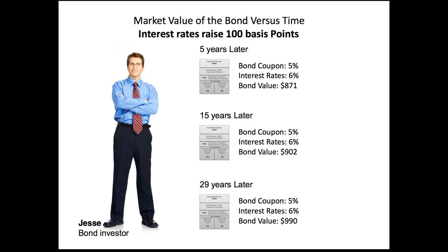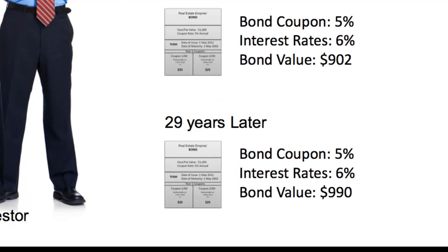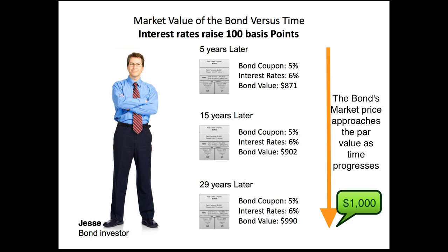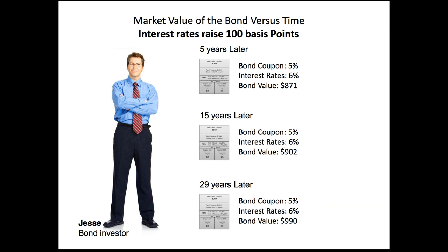If you're going to buy that bond at the 29-year mark with only one year left, you're going to receive two $25 coupon checks and then get $1,000 back. The longer you hold the bond and the closer it approaches the 30-year maturity mark, the more the bond's value approaches its par value or face value. But the longer a bond has before it matures and interest rates change, the more drastically the market value of the bond is going to change.